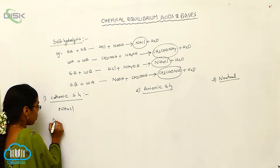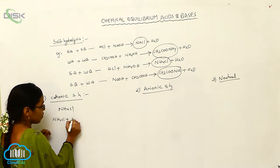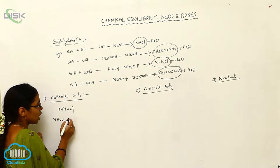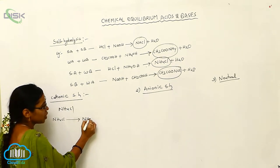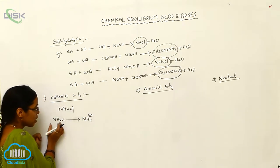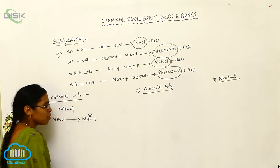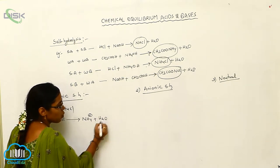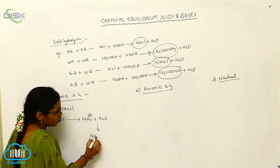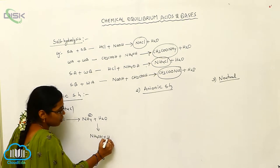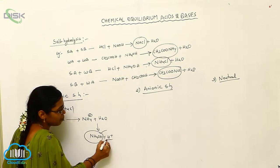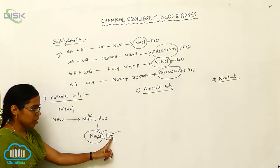Ammonium chloride undergoes hydrolysis with H2O. The salt undergoes ionization and forms the NH4+ ion. Taking the cationic part, from water (H2O), it reacts to form NH4OH as well as H+ ions. So NH4OH is formed, and the remaining part is H+ ions.